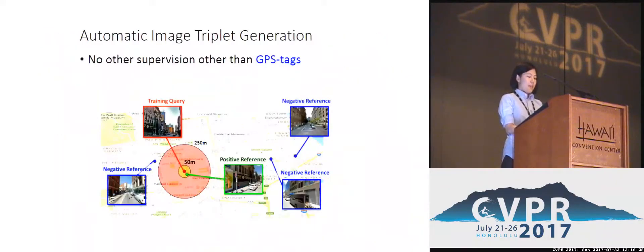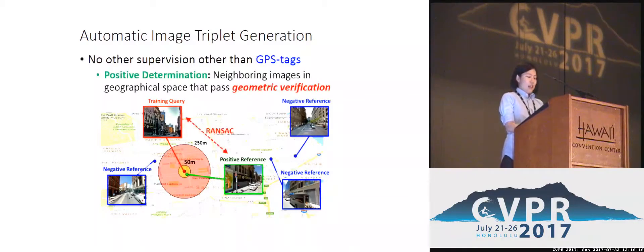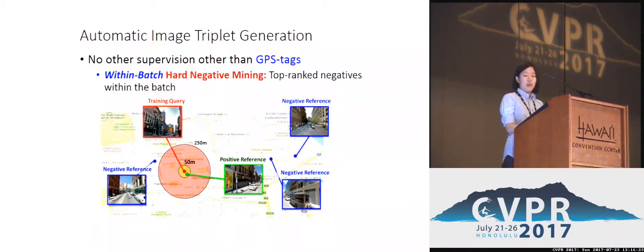Even for obtaining image triplets for geolocalization loss, our training pipeline requires no supervision other than GPS tags. We can determine positives by performing geometric verification against geographically nearby images once and for all. We also propose to mine hard negatives within batch, which is much more efficient than the traditional approach.